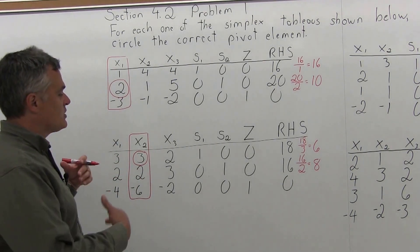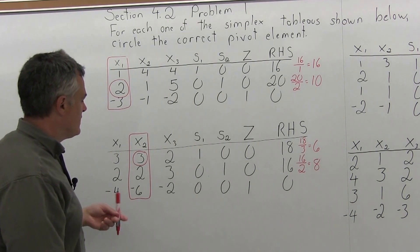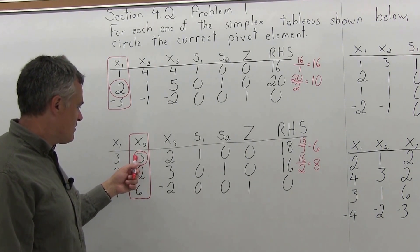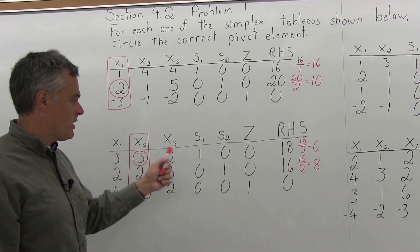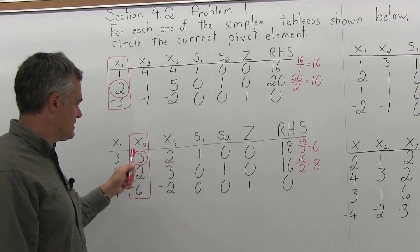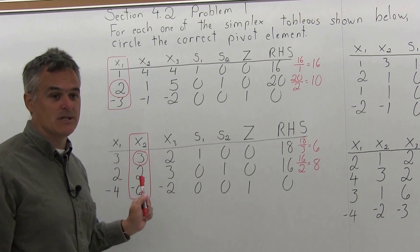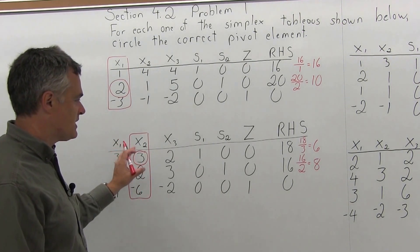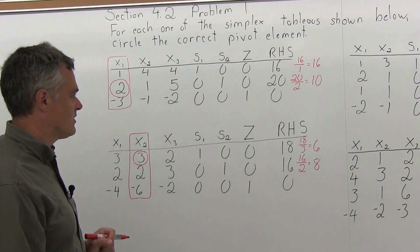To actually perform the pivot, you would turn that 3 into a 1 by multiplying by 1 over 3, and then zero out the rest of the X2 column. But for this problem, we just have to find the pivot element.